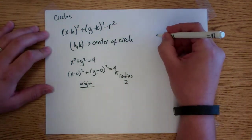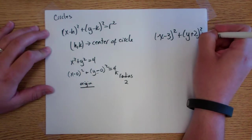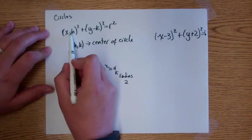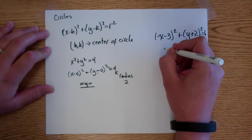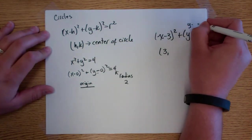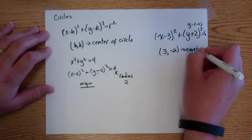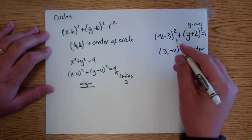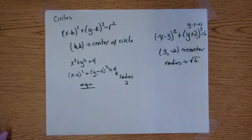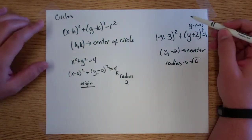Say we had something like (x minus 3) squared plus (y plus 2) squared equals 6. The center here: since this is x minus 3, and in the formula it's x minus h, that means h is positive 3. Since this is y plus 2, and the formula is y minus k, that means this is y minus negative 2, so k is negative 2. The center is (3, -2), and the radius would simply be the square root of 6. This part should probably be a review as well because we did go over circles in geometry.